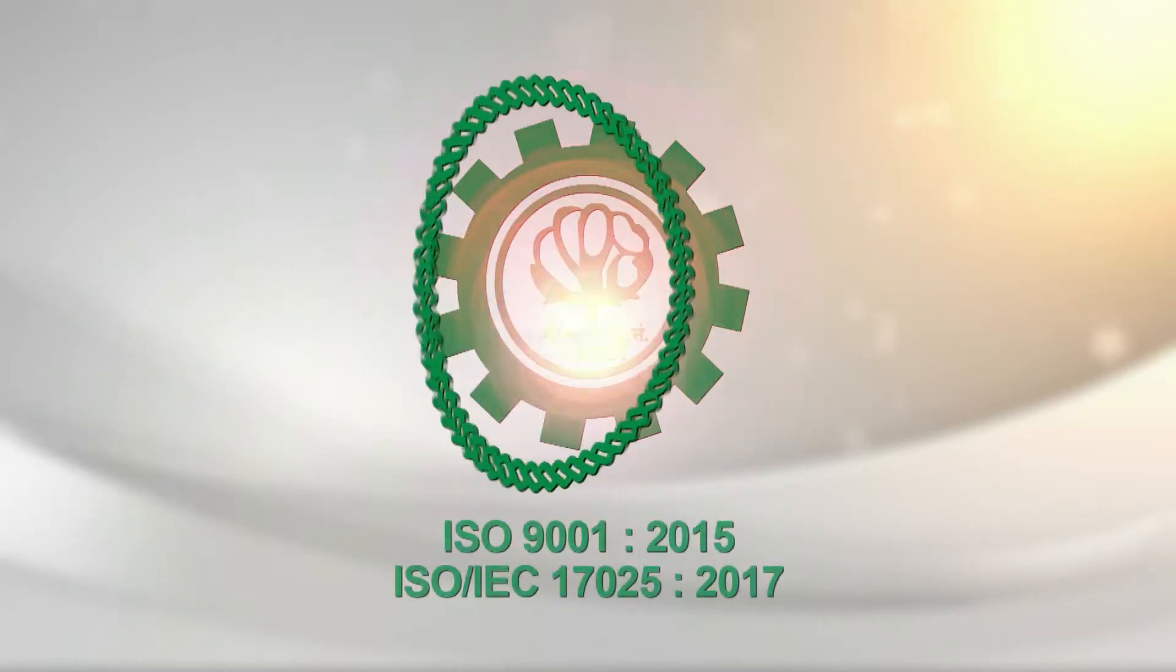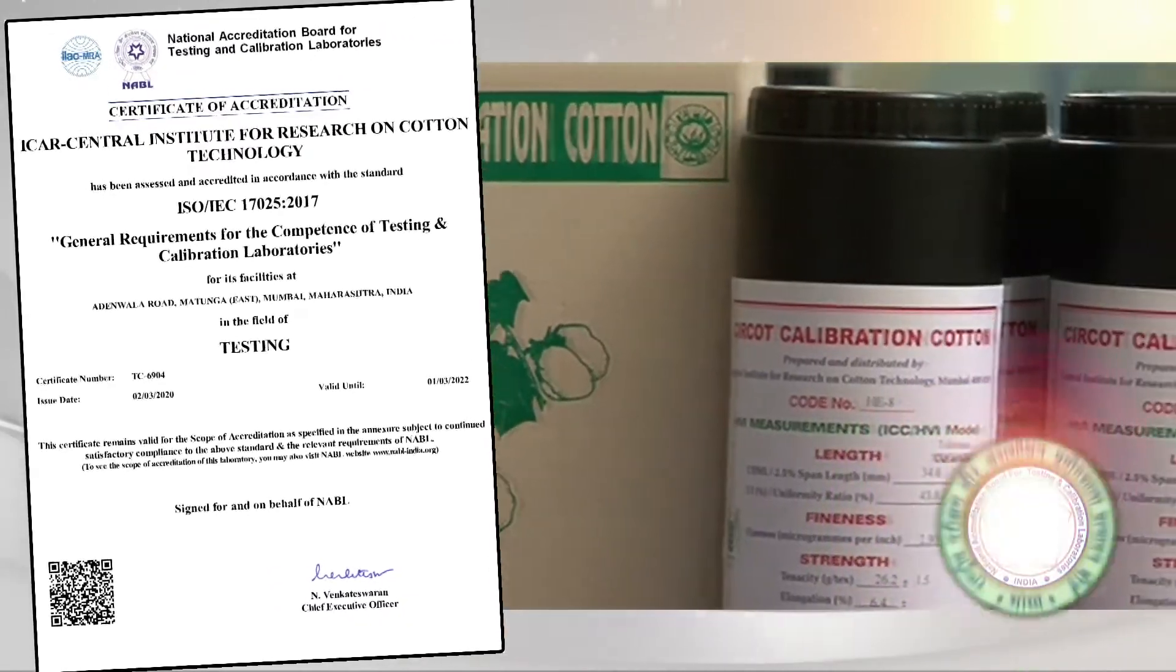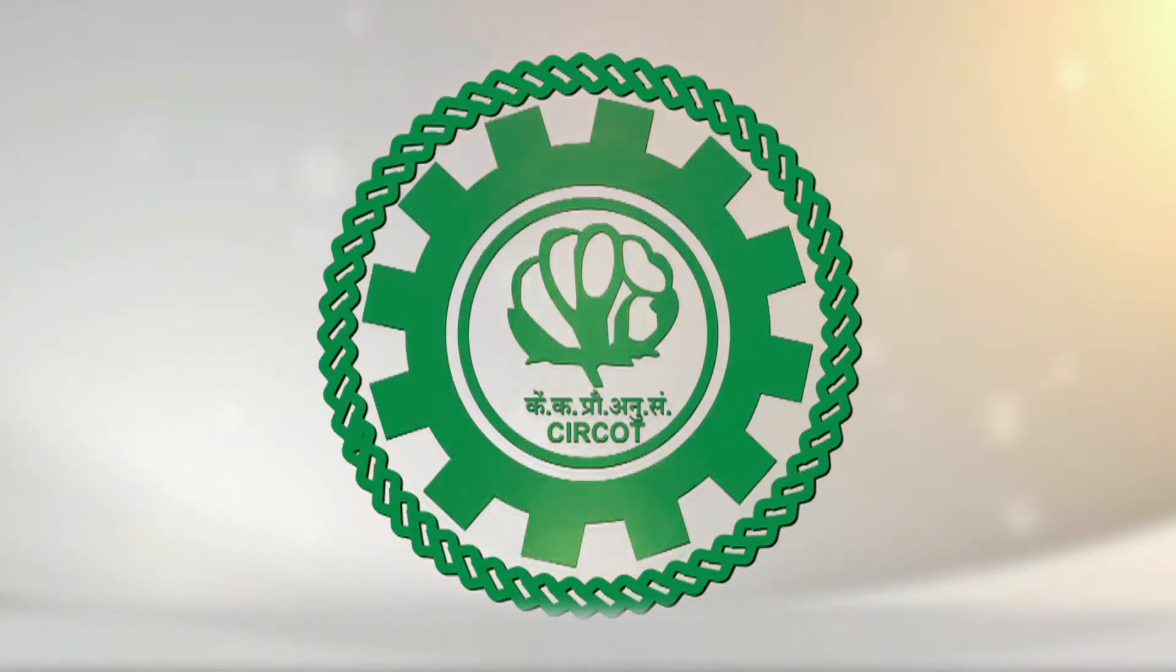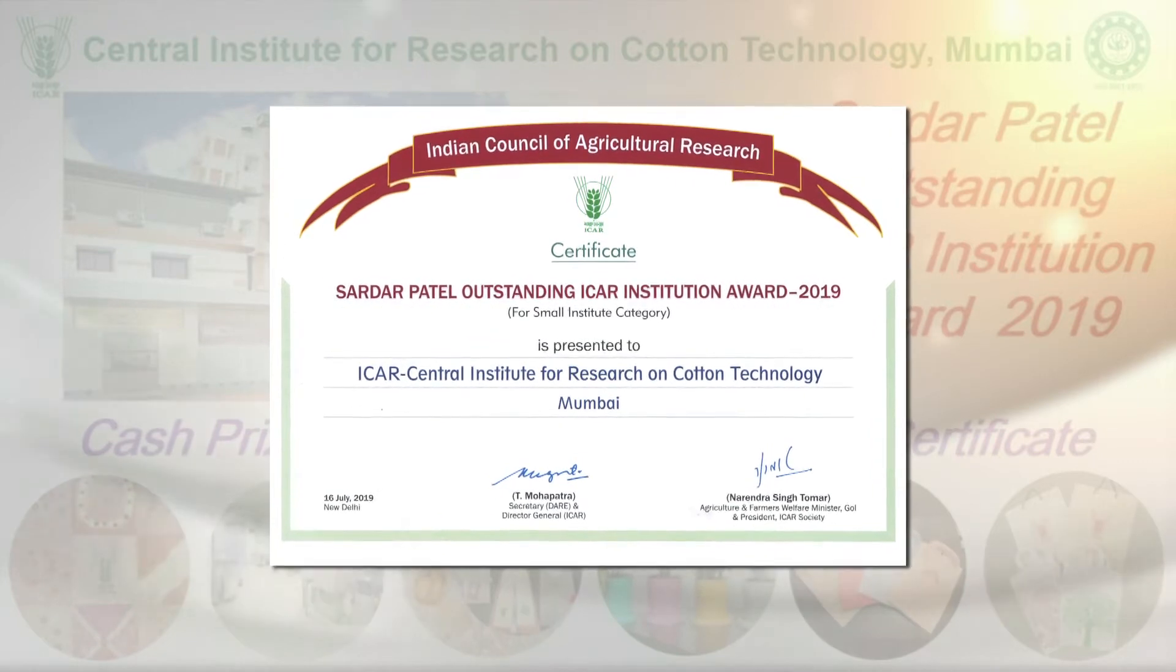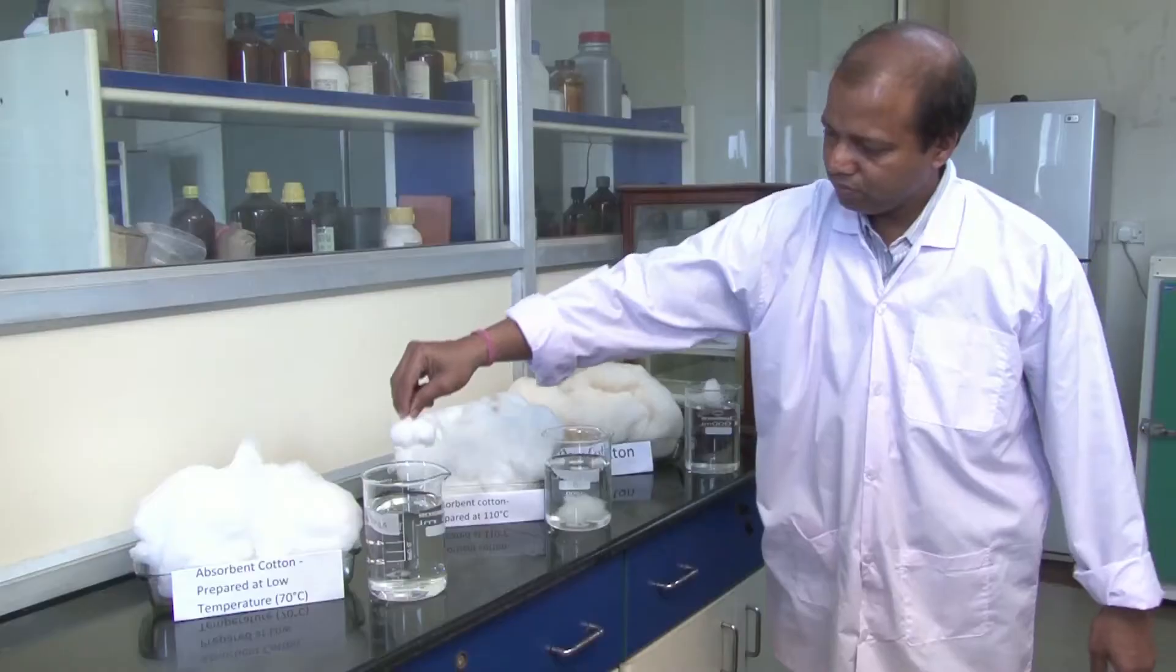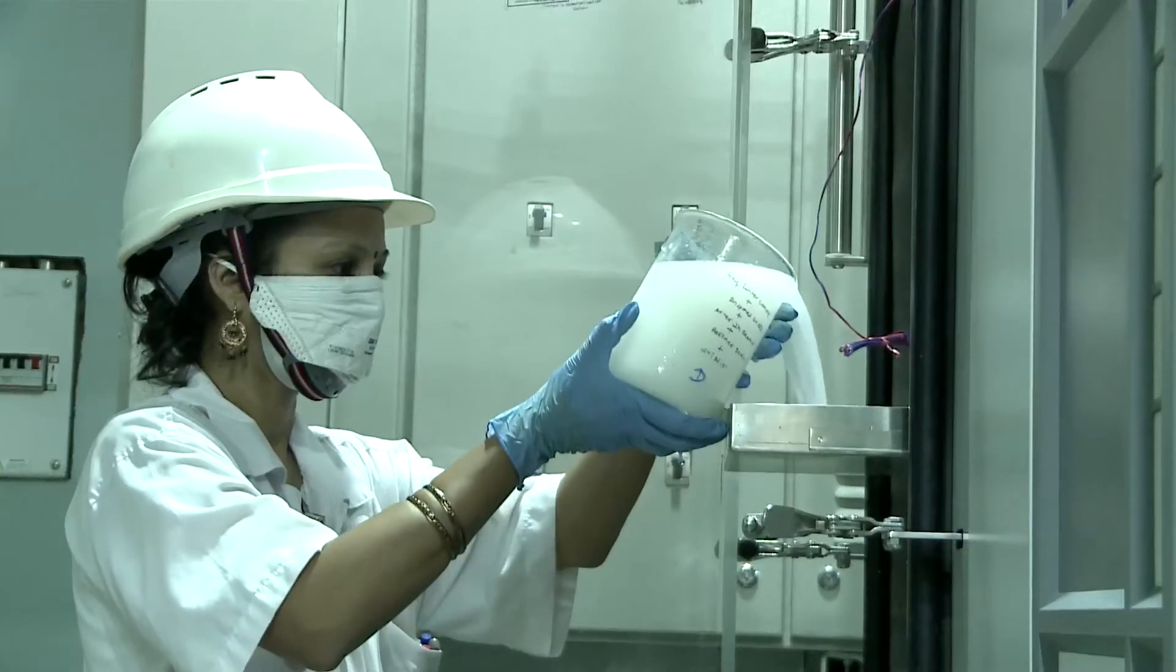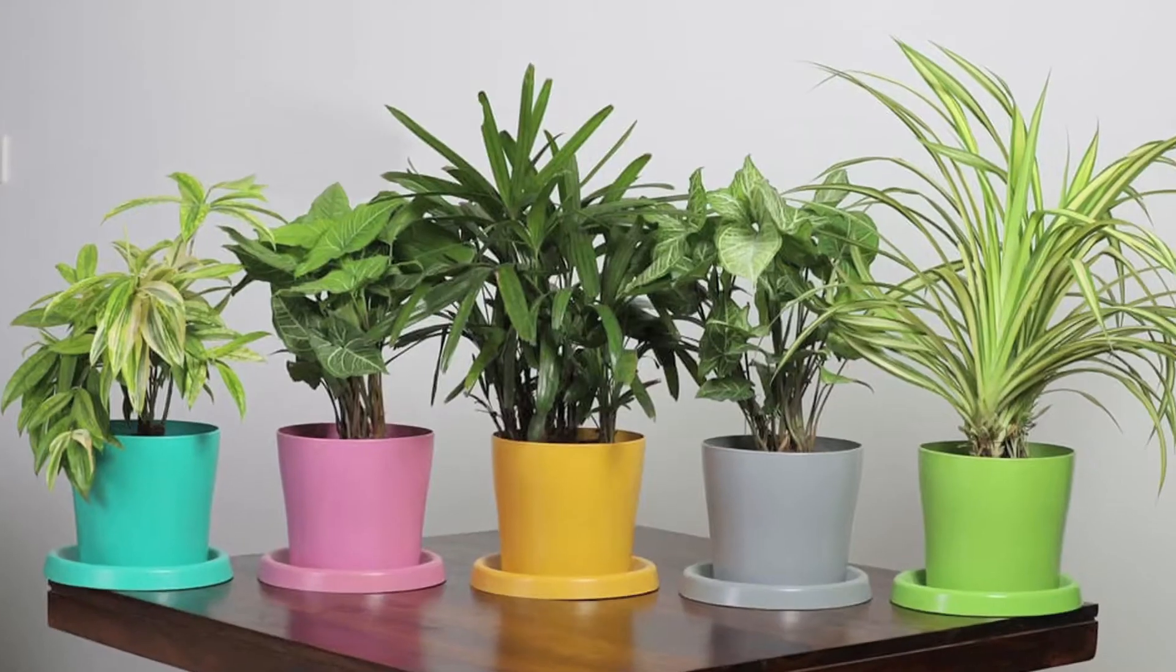CIRCOT is an ISO-certified institute and an accredited laboratory under NABL, functioning as a referral laboratory for cotton textile. CIRCOT has also been bestowed with prestigious Sardar Patel Outstanding ICAR Institution Award 2019 for the second time for its outstanding contribution in the field of research and technology development, dissemination and commercialization in cotton and allied sectors.